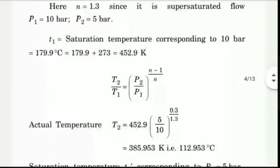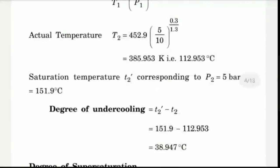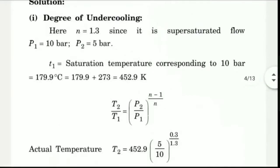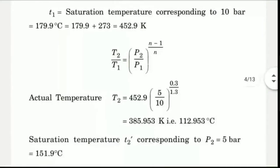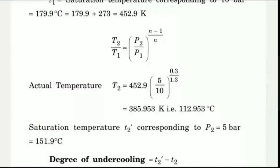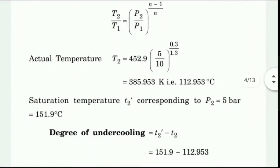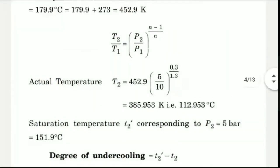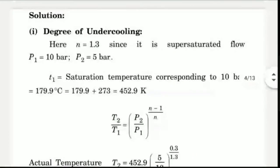Undercooling, the formula is T2 dash minus T2. So what is T2 dash minus T2? We need to find T2 and T2 dash using P1 and P2. It's simple.